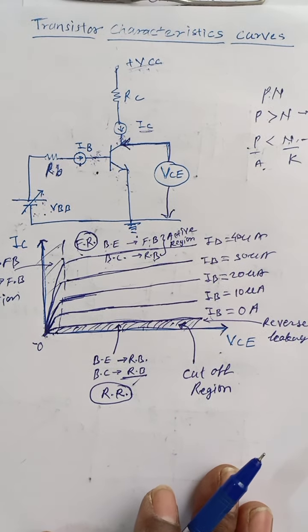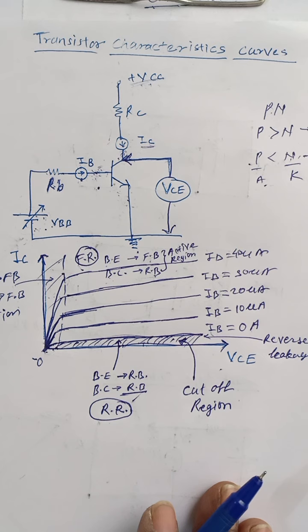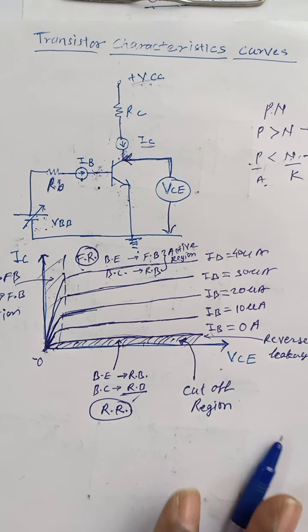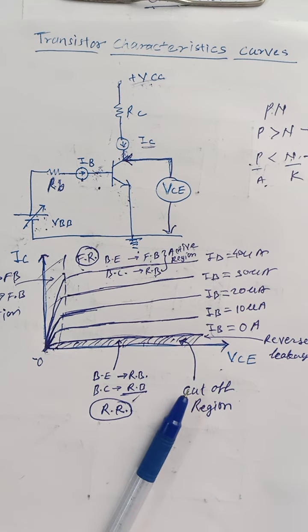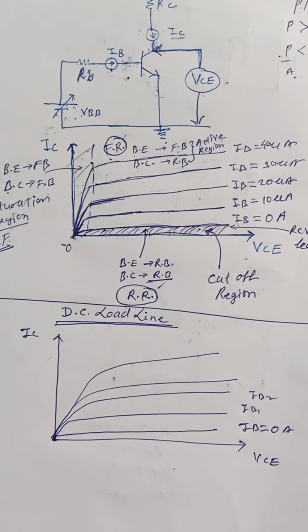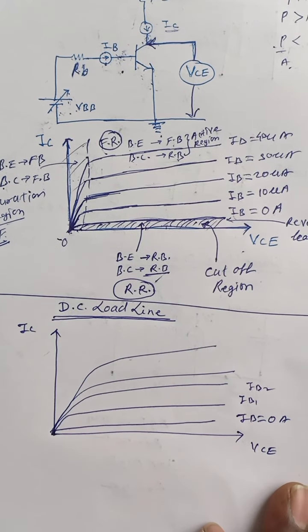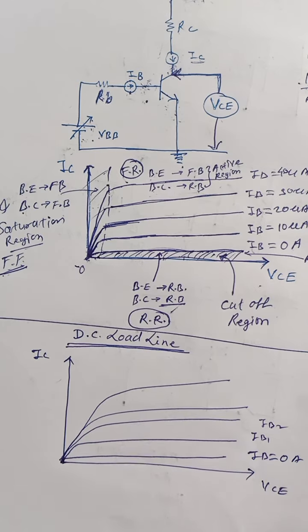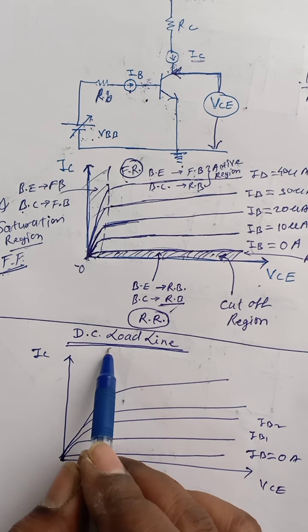So this is the transistor characteristic curve. Now we are going to consider the DC load line concept when the transistor is used as an amplifier.